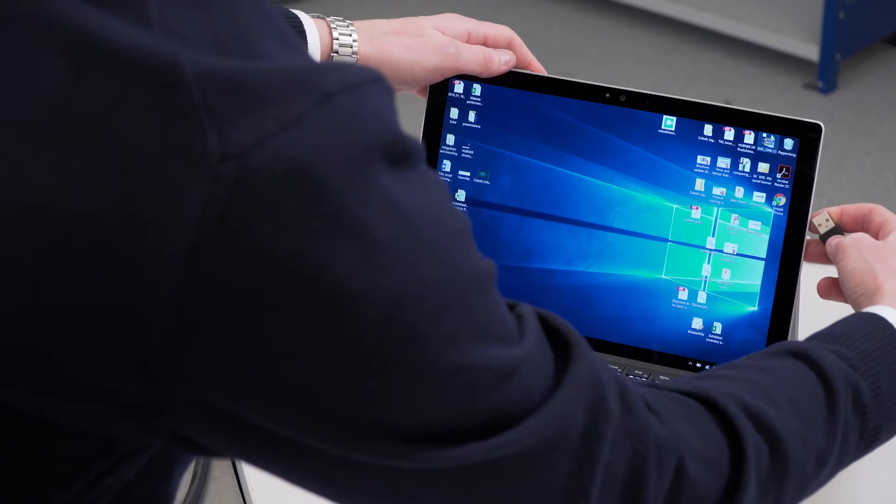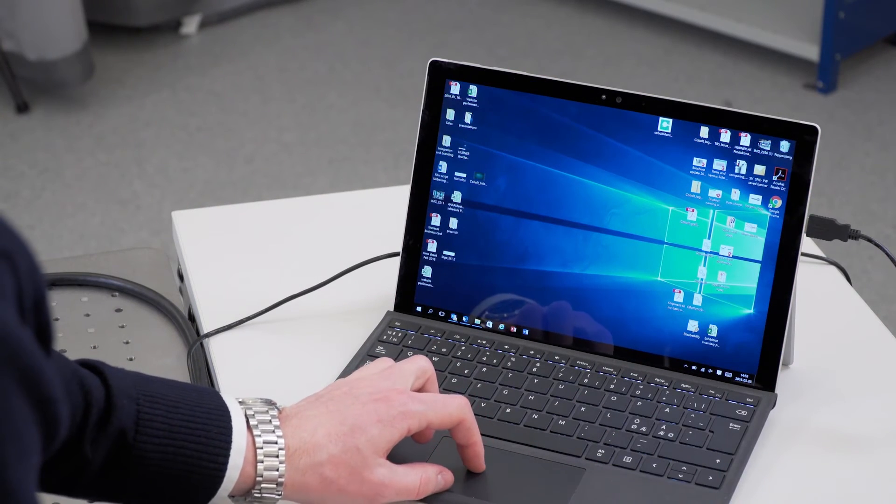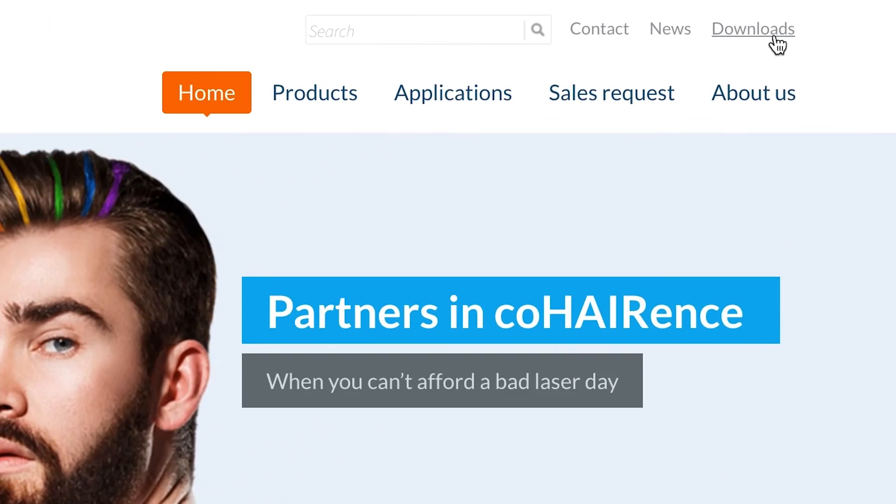Once your laser system is set up and ready to run, you can use our software to control and monitor the performance. The Cobalt Monitor 1 software is downloaded directly from the Cobalt website.